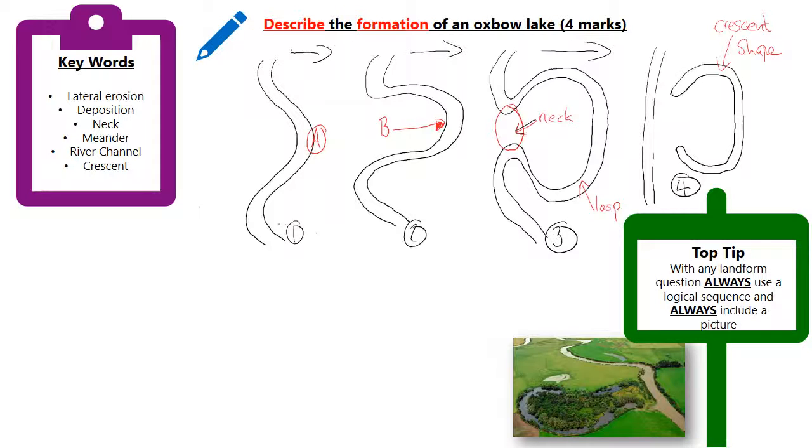What that means is how it goes from being a meander or bend in the river to being an oxbow lake. You will see it doesn't say to draw a diagram, but I would suggest with any formation question, whenever you are describing a landform at all, you always use a diagram.